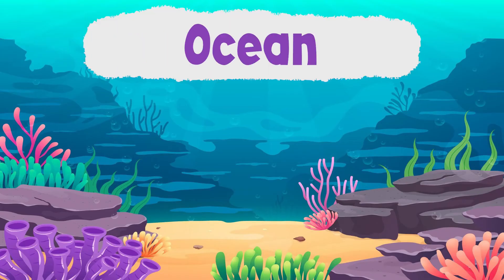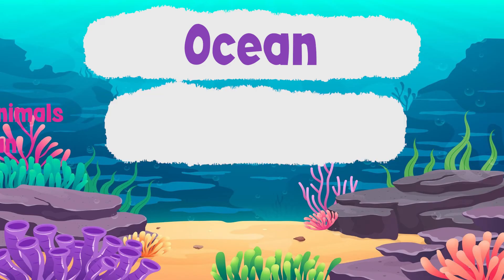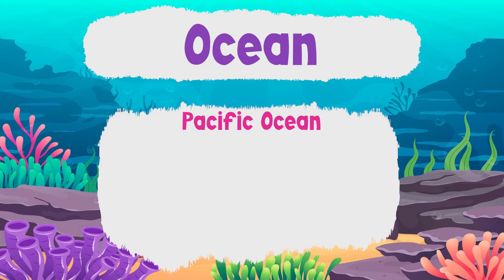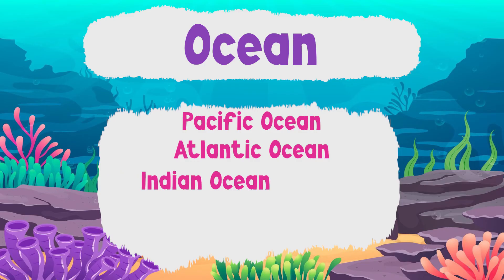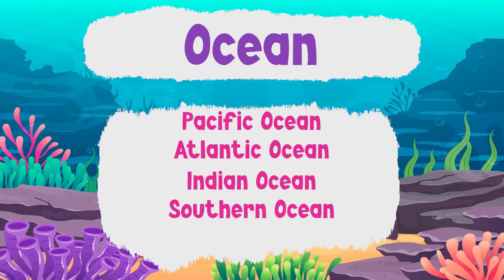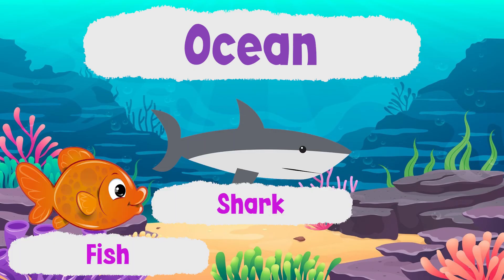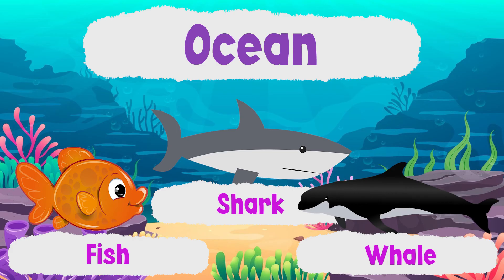Ocean habitats are salty water that is very wide and deep. About 1 million kinds of animals live in the ocean. The Pacific Ocean is the largest ocean in the world. Other types of oceans are the Atlantic, the Indian, the Southern, and the Arctic. Sharks, fishes, and whales are some of the animals that live in the ocean.